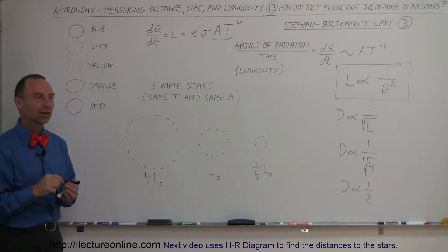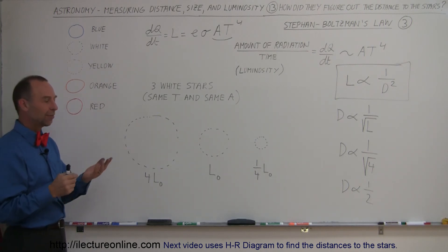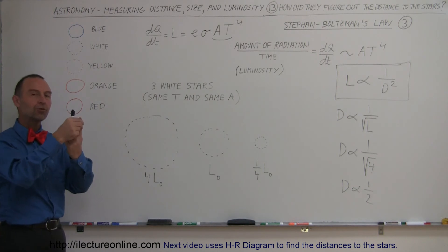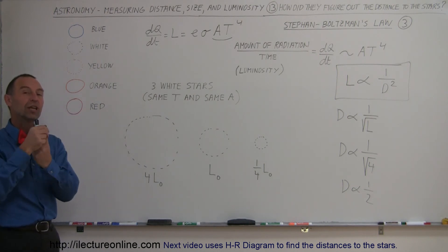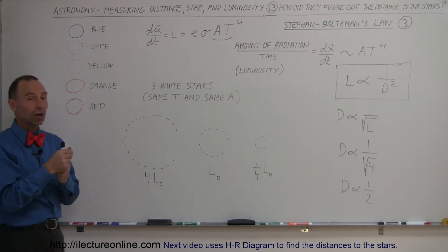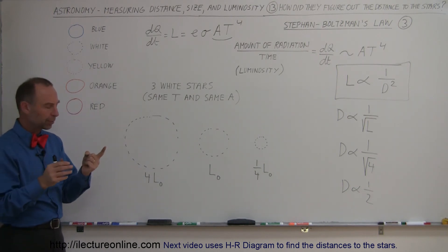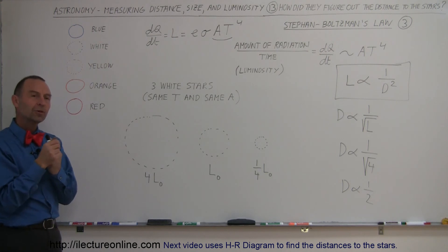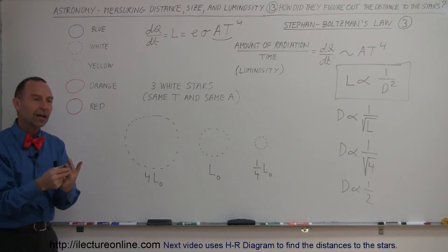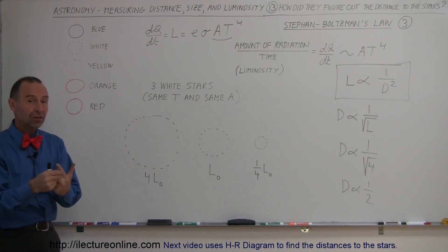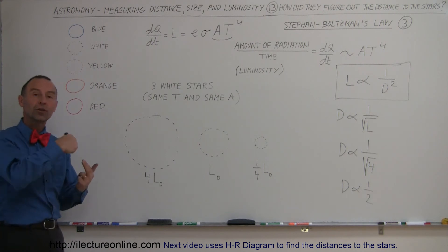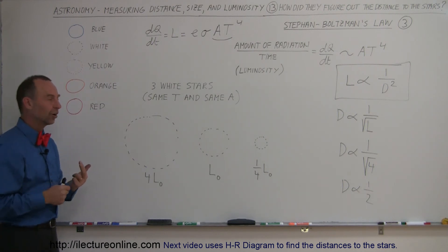We have three things: the temperature of a star, which is easily identified using Wien's Law; the size of the star, which is more difficult — we can find their relative size but not their actual size, because we don't know the distance to the stars.